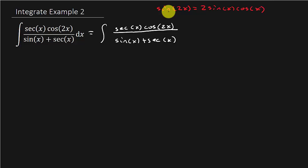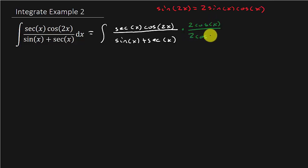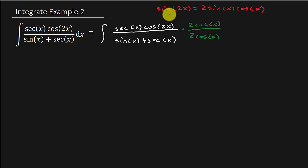So what I would actually need to do is multiply by 2 cosine x, and I would have to do it to both the numerator and denominator. Let's multiply by 2 cosine x over 2 cosine x. When I distribute, that's going to get this term here to be 2 sine x cosine x, which I can rewrite as sine of 2x.